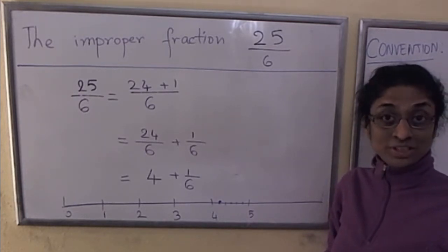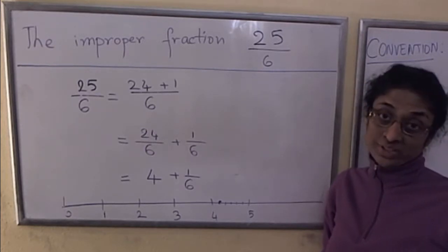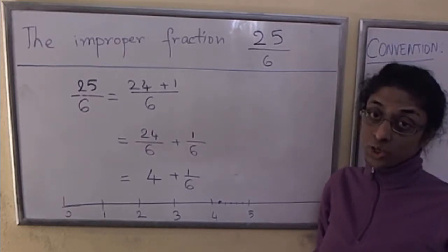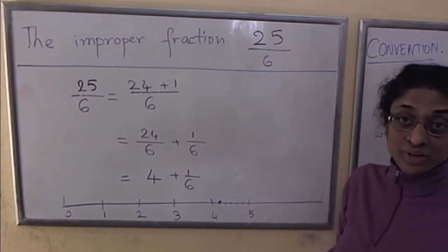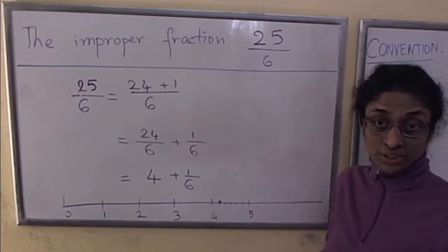In a different video we discussed 24 over 6, where the numerator was in fact a multiple of the denominator. This is not one such fraction. The numerator is not a multiple of the denominator.